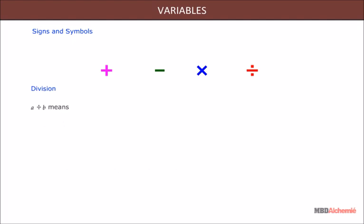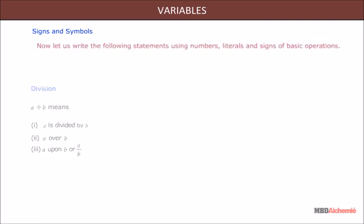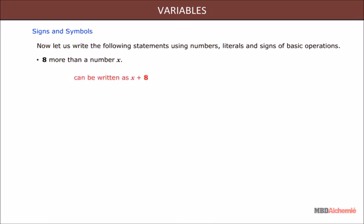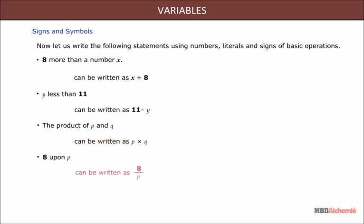Division of a by b means a is divided by b, a over b, a upon b. Now let us write the following statements using numbers, literals, and signs of basic operations. 8 more than a number x can be written as x plus 8. Y less than 11 can be written as 11 minus y. The product of p and q can be written as p into q. 8 upon p can be written as 8 divided by p.